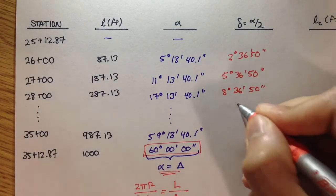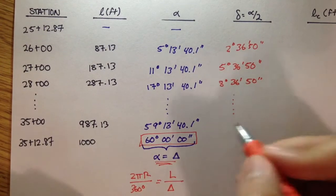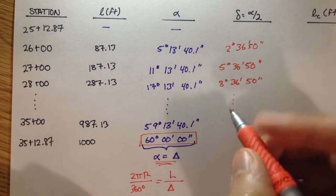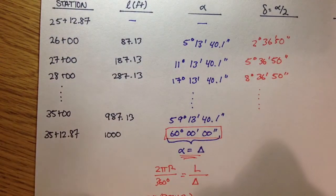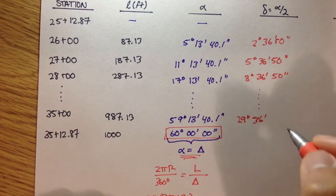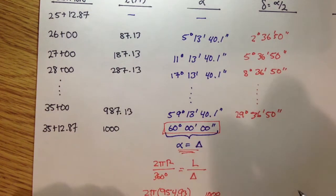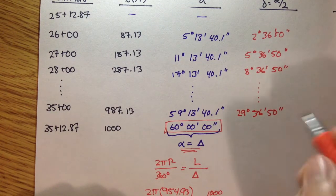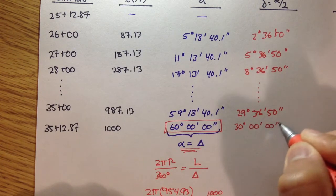And you keep doing this for all the stations, or all the stakes that you want to put out on the field. And you come to station 35 plus 00, and you should get 29 degrees, 36 minutes, 50 seconds. And then finally, the last station, 30 degrees, 0 minutes, 0 seconds.